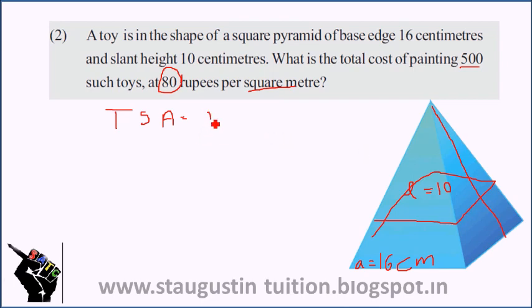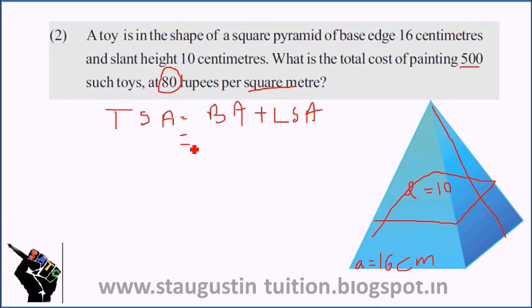The total surface area is the base area plus lateral surface area. We know that the formula is a² + 2al.